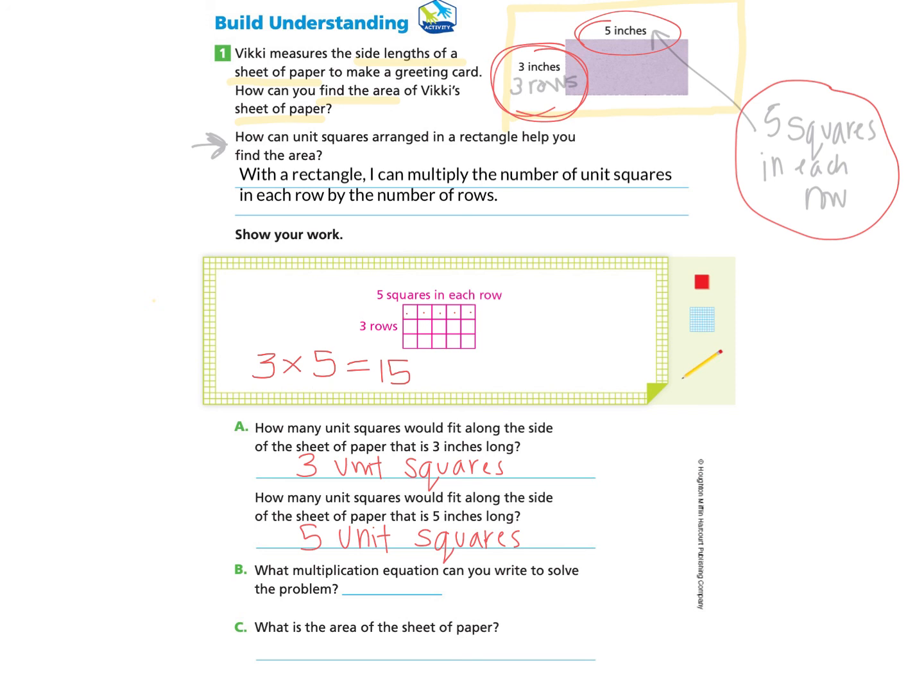Question B: what multiplication equation can you write to solve the problem? We already did that up here, so we can just rewrite that again: 3 times 5 equals 15. And the last one, which is what we're trying to solve: what is the area of the sheet of paper? We have solved that. It is 15, but we can't just write it as 15. We're going to say it is square, and then we need to go back up and find out what unit were they using. We will see that it is inches, so we will write inches.